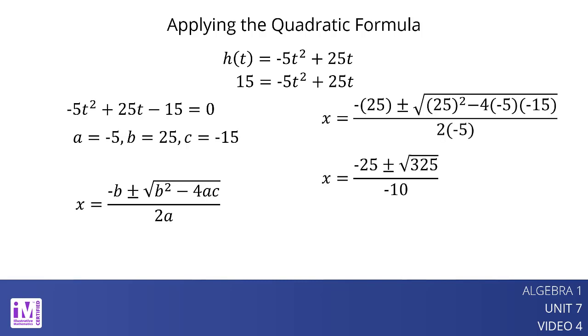The expression negative 25 plus or minus the square root of 325 all over negative 10 represents the two exact solutions of the equation. We can also get approximate solutions by using a calculator.